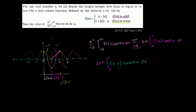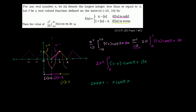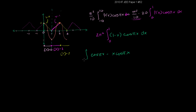Expanding (1 minus x) cosine(πx) gives cosine(πx) minus x·cosine(πx). The antiderivative of cosine(πx) is straightforward. For x·cosine(πx), we use integration by parts. Recall that the integral of u dv equals uv minus the integral of v du. We want u to be something simpler after differentiation, and dv something that doesn't get more complicated after integration.